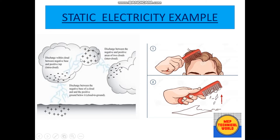Let's discuss how electricity is produced during lightning and combing. Lightning energy is produced because of the continuous movement of clouds. Those clouds have friction between two layers — either between clouds and clouds, or clouds with the earth.